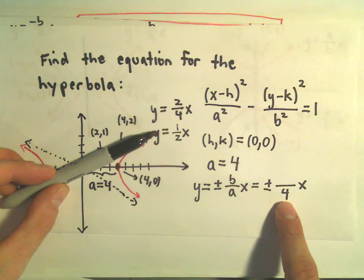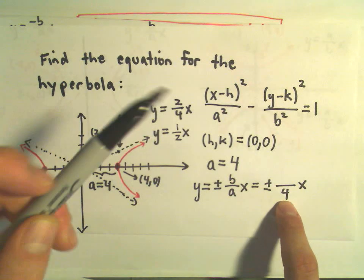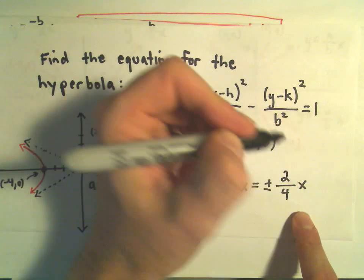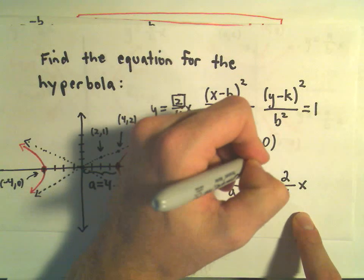Since I know that my a value is positive 4, well then, now this numerator must be our b value. So it says our b value is going to equal 2.